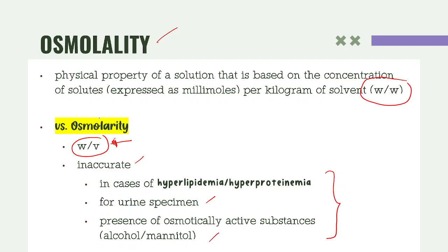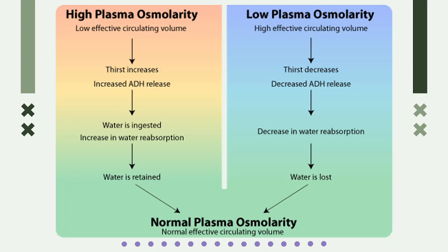Whether we use osmolality or osmolarity, always remember that this is synonymous with solute concentration. Osmolarity is very important in the distribution of water. High or low levels of osmolarity greatly affect water movement. When we say high plasma osmolarity, it means increased solute concentration — and if solute increases, water concentration will always decrease oppositely.